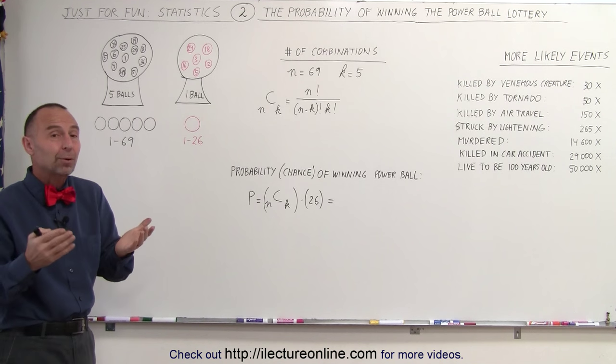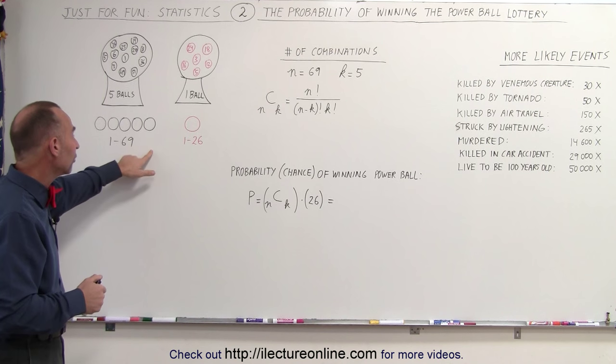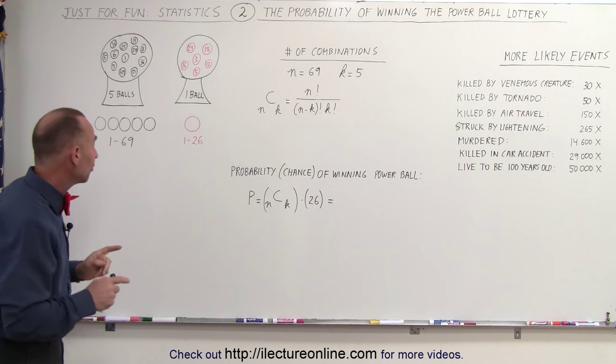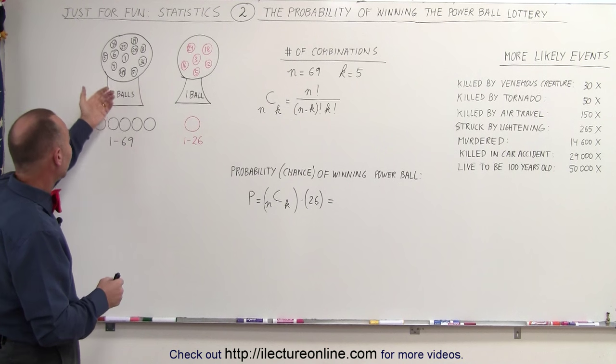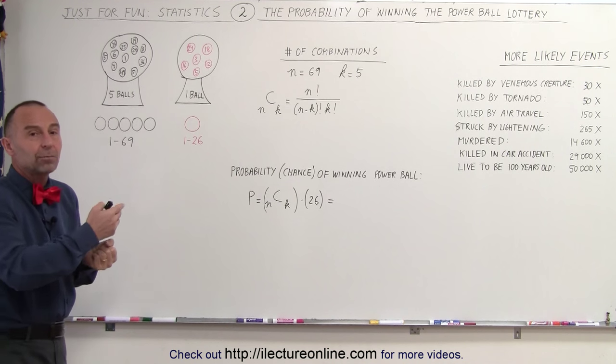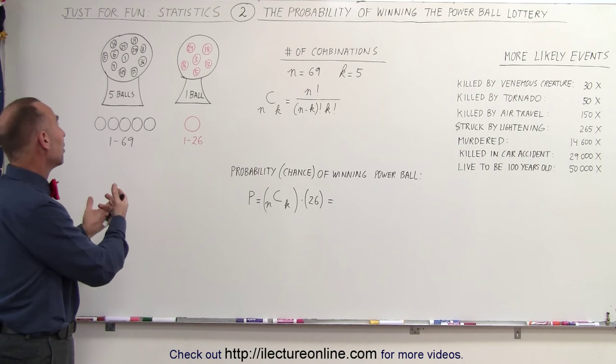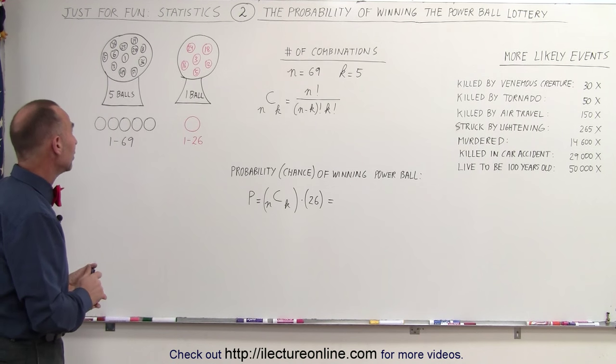In order to win the grand prize, you have to have five matching numbers on the white balls and one matching number on the red ball. Now it turns out that the white balls cannot have repeating numbers, so if the number 49 is drawn out, the second, third, fourth, and fifth balls cannot have number 49 on it, you must have a different number. That makes sense because there's only 69 balls in the machine.